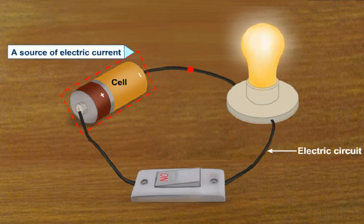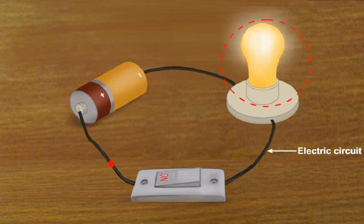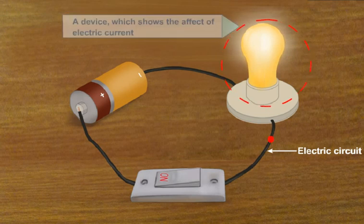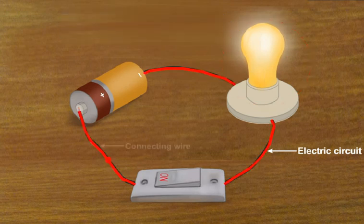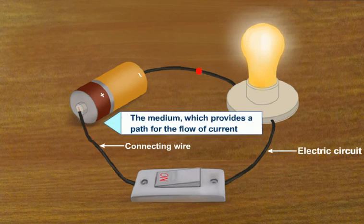a bulb or load which is a device which shows the effect of electric current, a connecting wire which is the medium which provides a path for the flow of current,